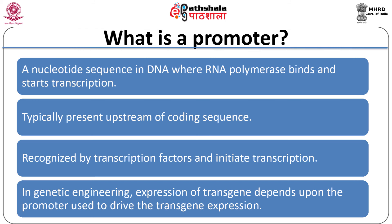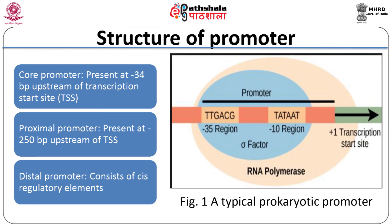In genetic engineering, expression of a transgene depends upon the promoters used to drive the transgene expression. A typical promoter is made up of a core, proximal, and distal promoter. The core promoter is located at approximately minus 34 bases upstream of the transcription start site (TSS), which consists of the RNA polymerase binding site, transcription start site, and flanking sequences. The proximal promoter is located at approximately minus 250 bases upstream of TSS, and the distal promoter consists of various cis-regulatory elements, mainly involved in tissue-specific expression of the target gene.